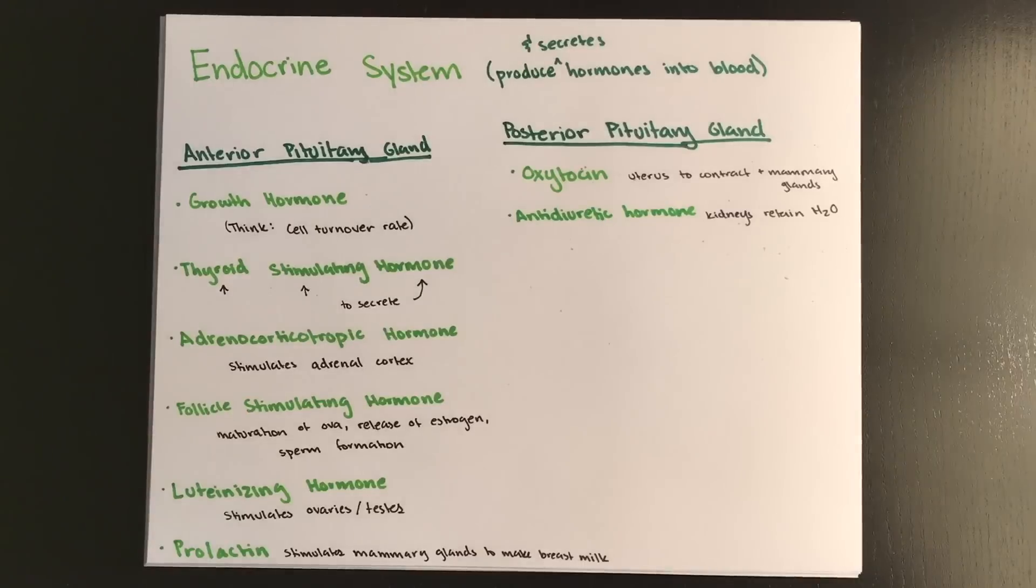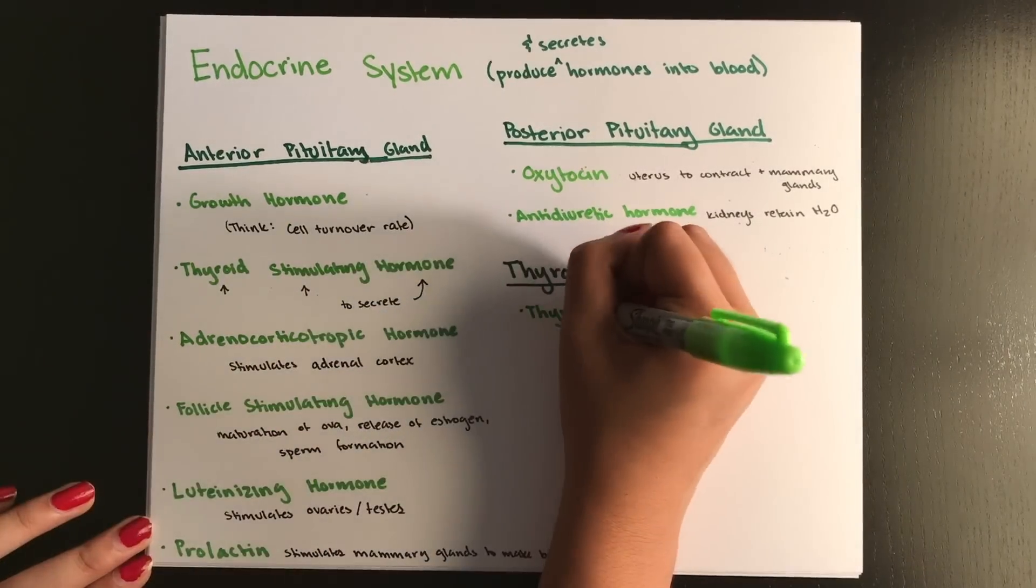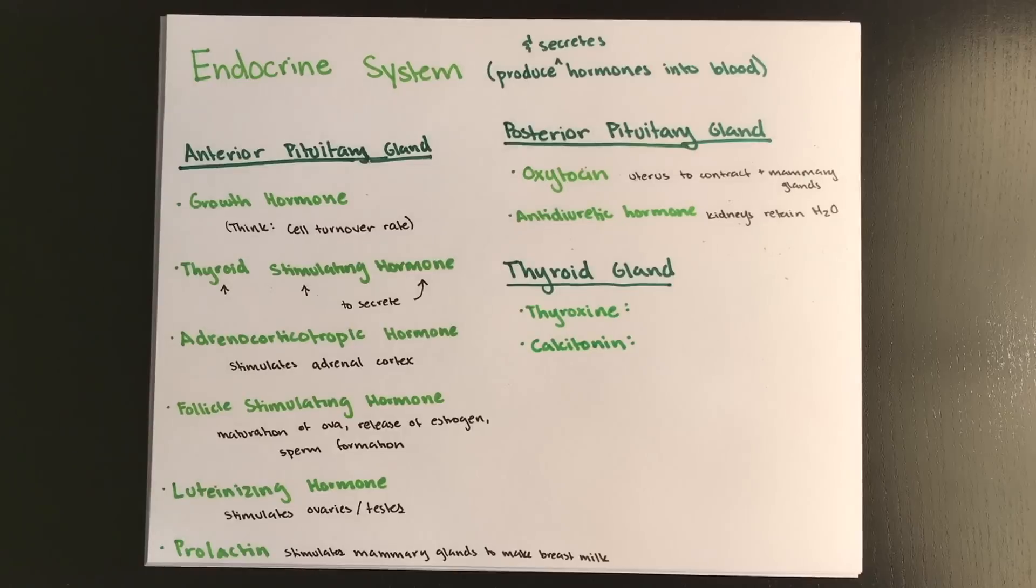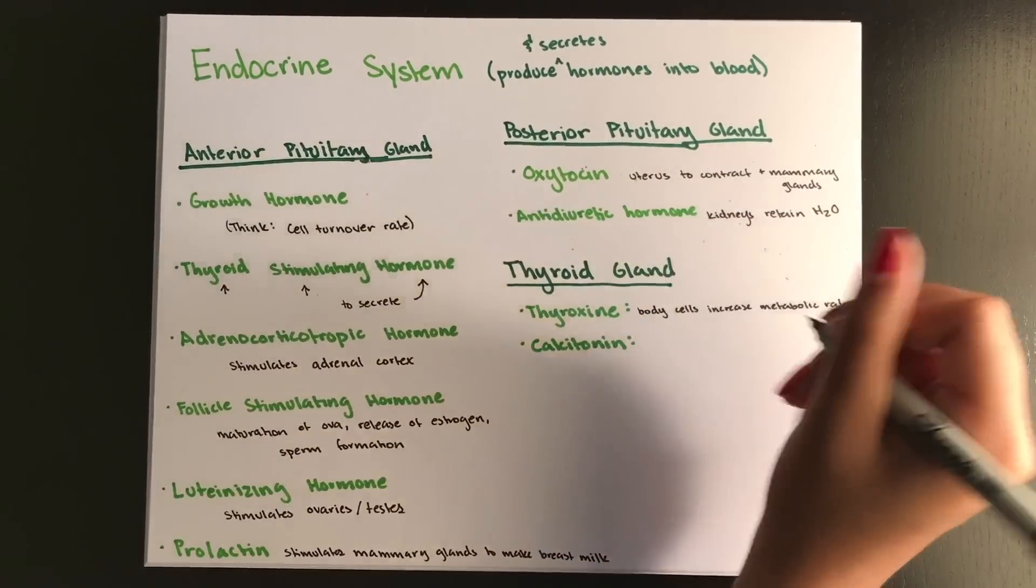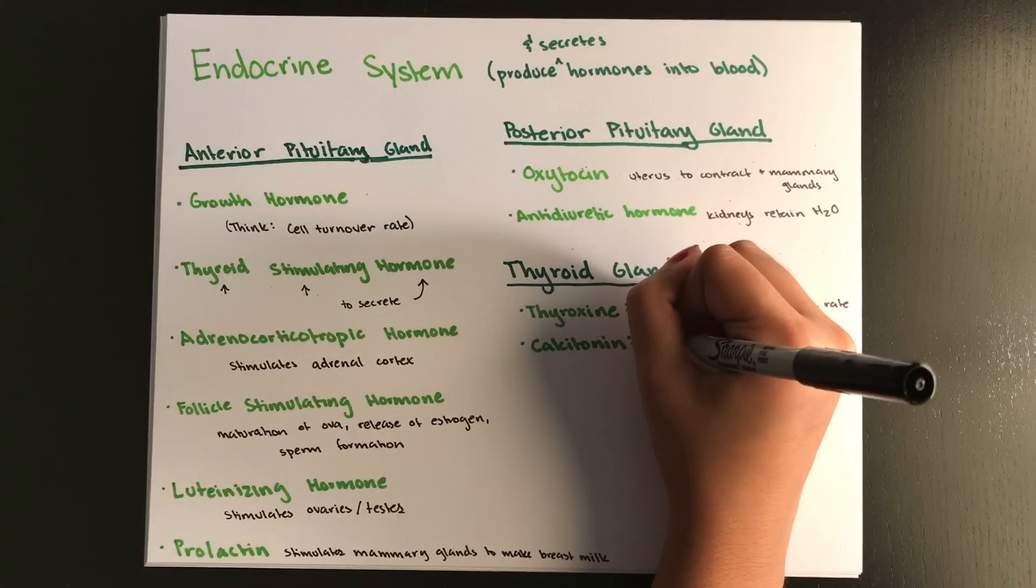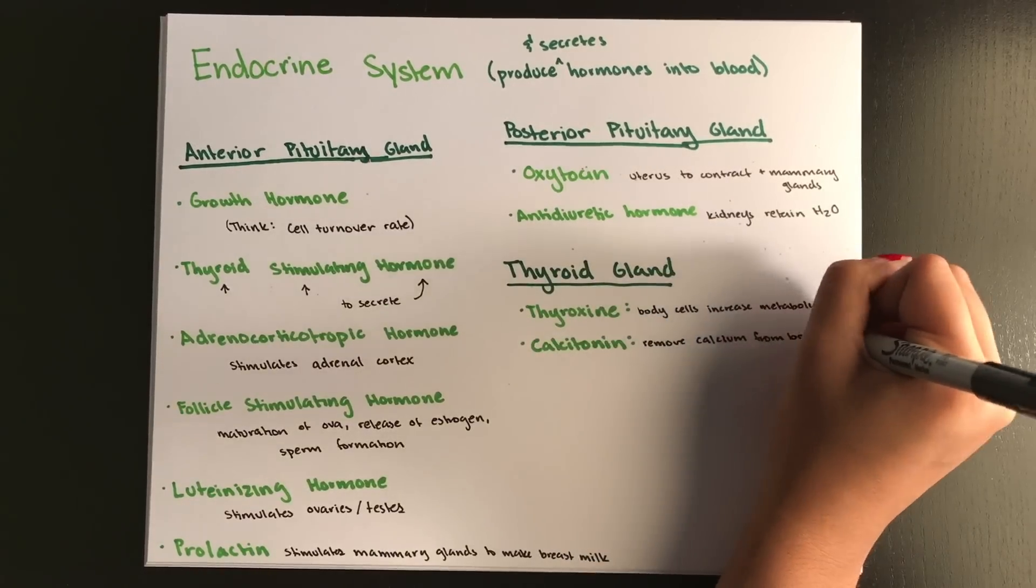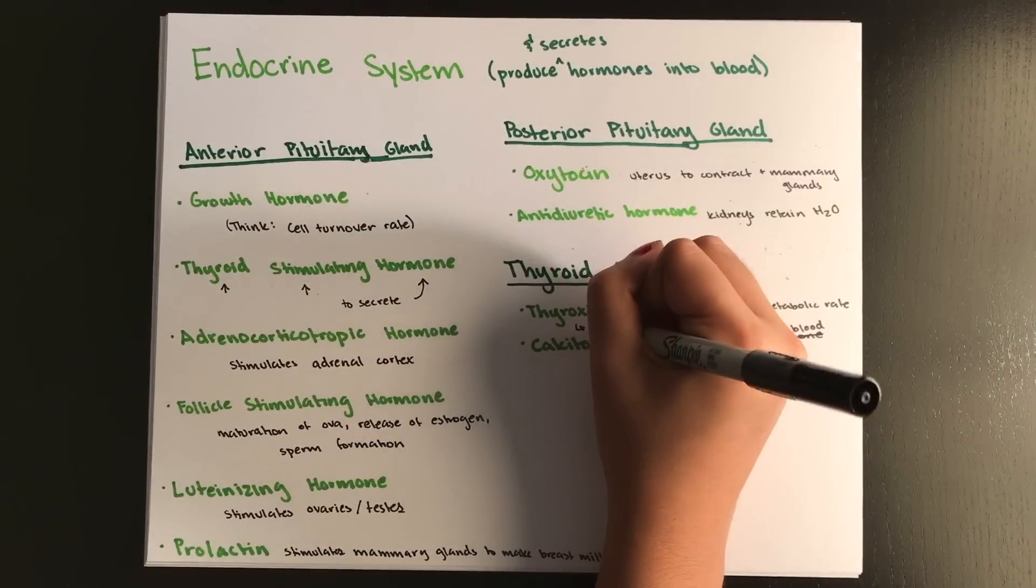The thyroid gland will secrete your thyroid hormones, known as thyroxin and calcitonin. Your thyroxin makes the body cells increase their rate of metabolism. And if you don't have enough of it, you have hypothyroidism. And the effect is people have really low metabolic rates. And the opposite is hyperthyroidism, which symptoms include a really fast heartbeat and weight loss, understandably. Calcitonin stimulates cells in the bone to remove calcium from the blood and build new bone. So this reduces your blood calcium levels.